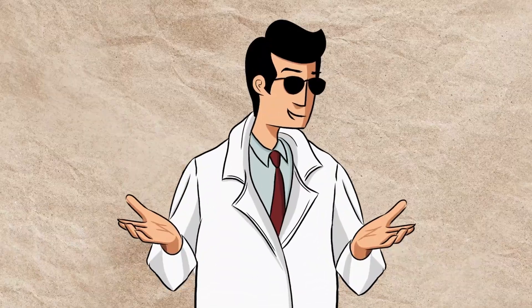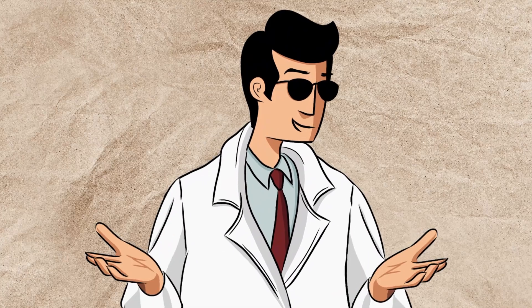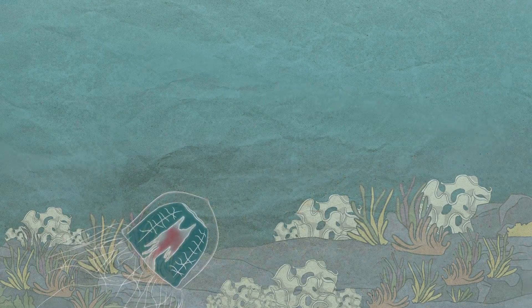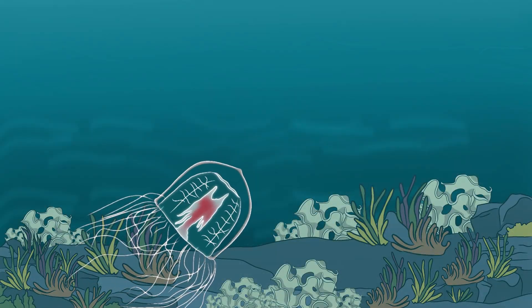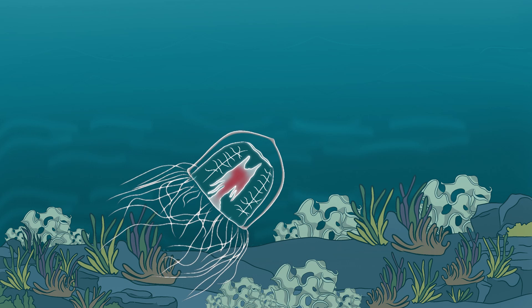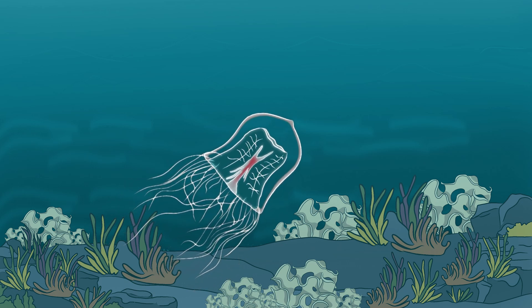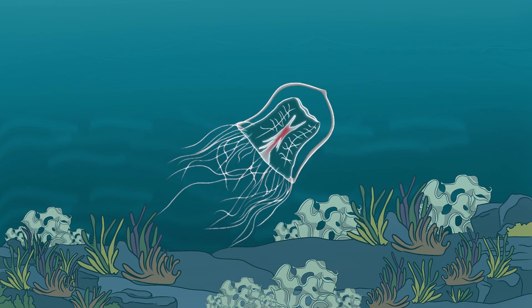Imagine if a butterfly could turn back into a caterpillar, or if an adult human could transform into a baby and grow up all over again. This jellyfish does exactly that — not just once, but potentially over and over again, making it biologically immortal. While it can still be eaten by predators or succumb to disease, it has the unique ability to escape death from aging.